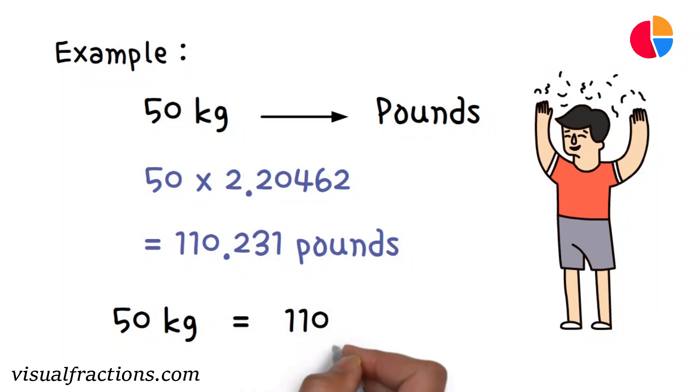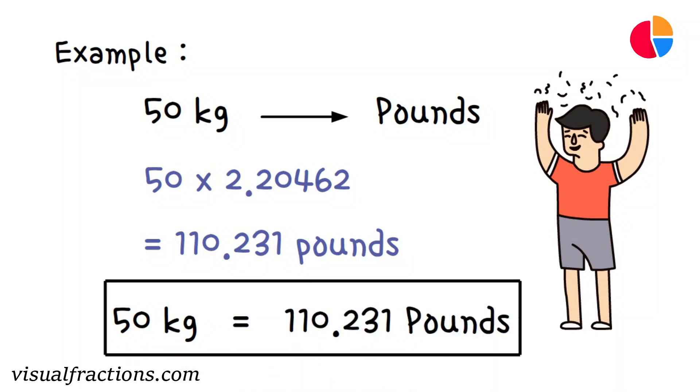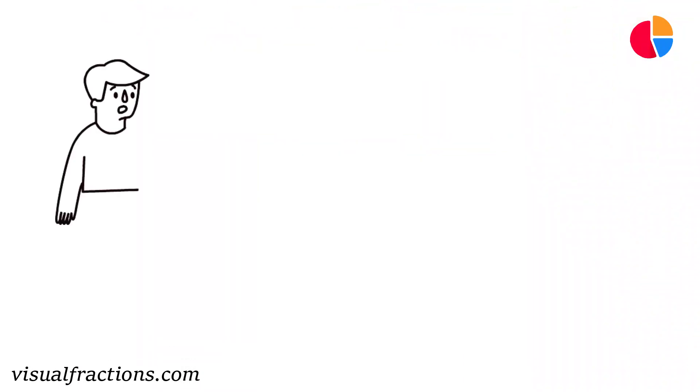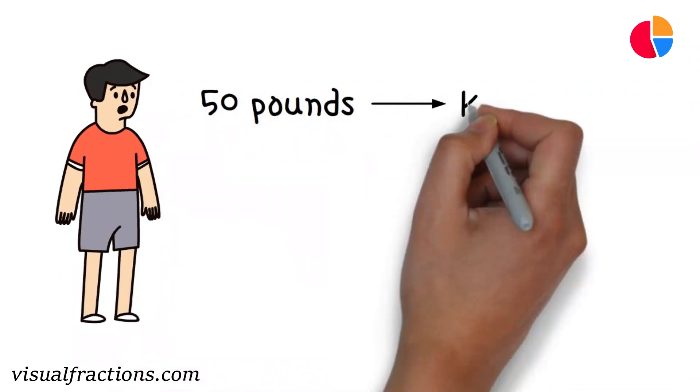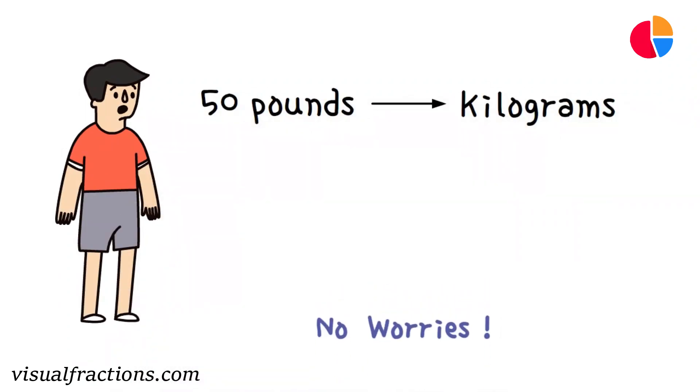50 kilograms is equal to 110.231 pounds. But wait, what if you need to convert 50 pounds to kilograms? Don't worry, we've got you covered.